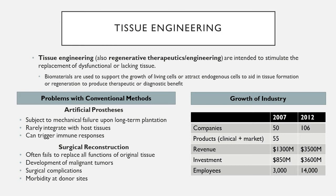The textbook gives some stats on the growth of this industry, particularly focusing on 2007. Around 50 companies were active, producing approximately 55 products either in clinical stages or already on the market. Typical revenue was around $1.3 billion, investment close to $1 billion, and about 3,000 employees supported this industry. By 2012, the number of companies had more than doubled, revenue increased to about $3.5 billion, investment similarly around $3.5 billion, and employees jumped to approximately 14,000 — an incredible jump in just five years.